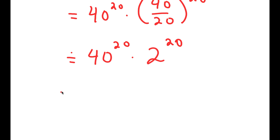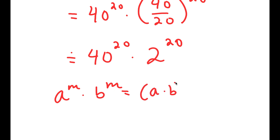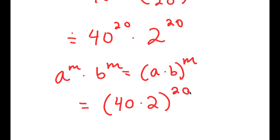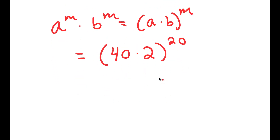Now if I have something in the form a to the power of m times b to the power of m, this is going to equal a times b to the power of m. So 40 to the power of 20 times 2 to the power of 20 is going to equal 40 times 2 to the power of 20. And 40 times 2 is equal to 80, so I get 80 to the power of 20.